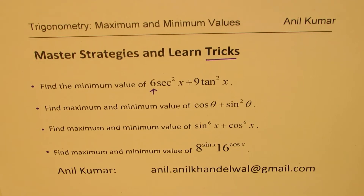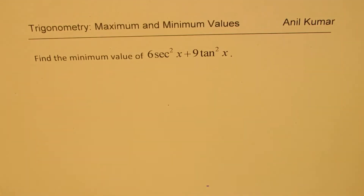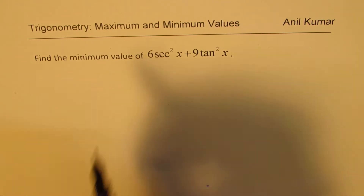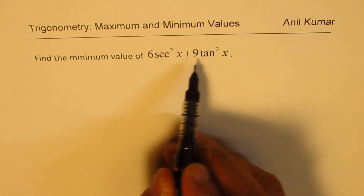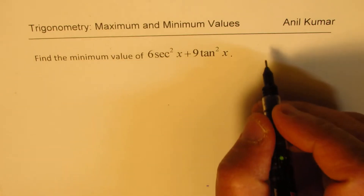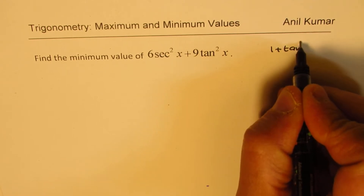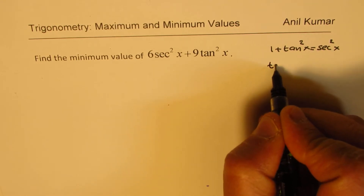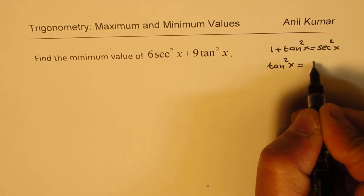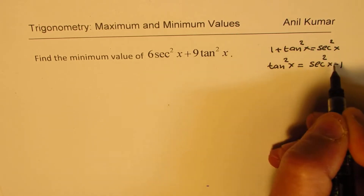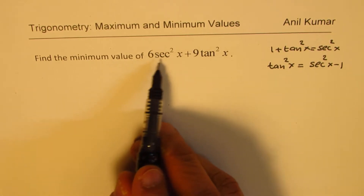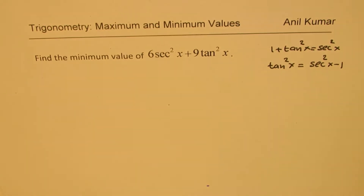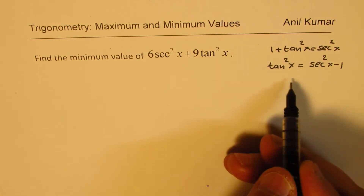Let's take the very first example, which involves a trick. We have secant and tan, which are related. We know 1 plus tan squared x equals secant squared x. So you could write tan squared x as secant squared x minus 1. You could also write secant squared x as 1 plus tan squared x and work from either direction.